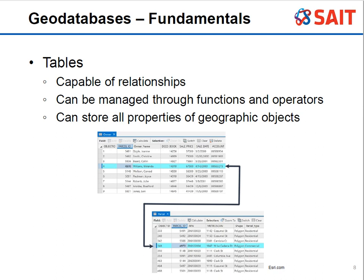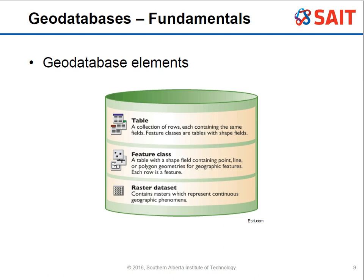What's really neat about tables is they have the ability to have relationships. I can identify an attribute and see if that same attribute exists in another table, then connect the two using functions and operators. This lets us store properties of geographic objects across two different tables without necessarily combining them. The main elements in a geodatabase are tables, feature classes, and raster datasets — you don't need all three, but a strong geodatabase for a project would have all three.